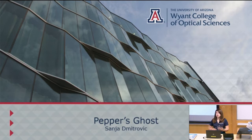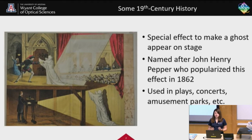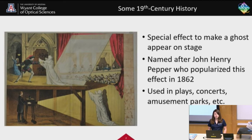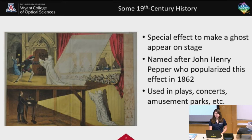Today, I'm going to be talking about a demonstration called Pepper's Ghost. What is Pepper's Ghost? It's a special effect to initially make a ghost appear on stage. This was thought of around the 19th century, and it was named after John Henry Pepper, who popularized it in 1862. It's used in plays, concerts, amusement parks, and all sorts of applications that even apply to the modern day.